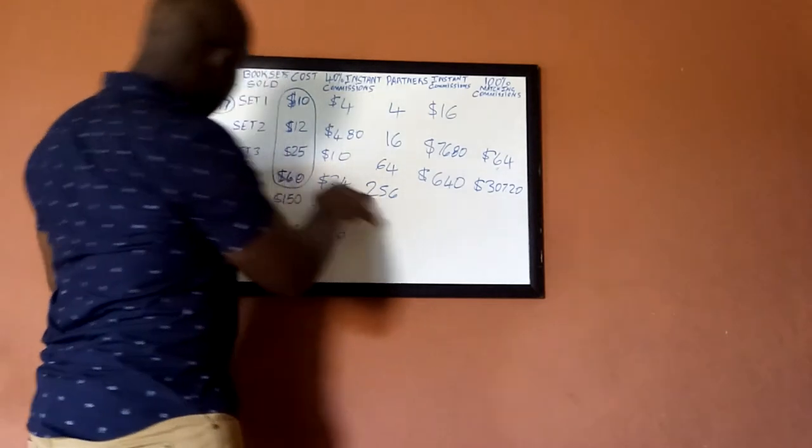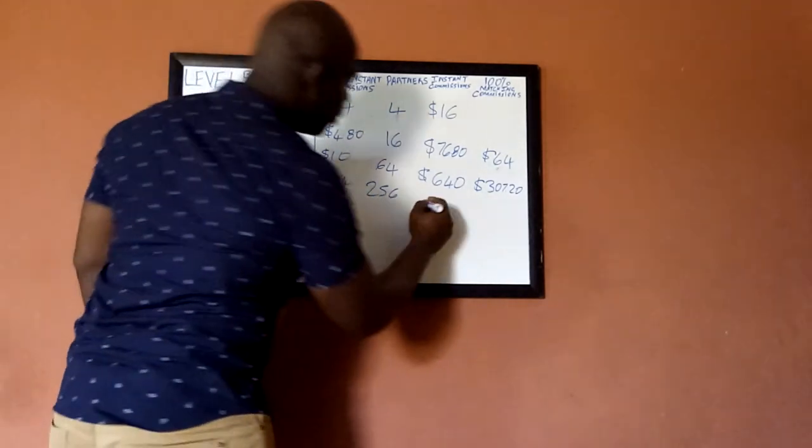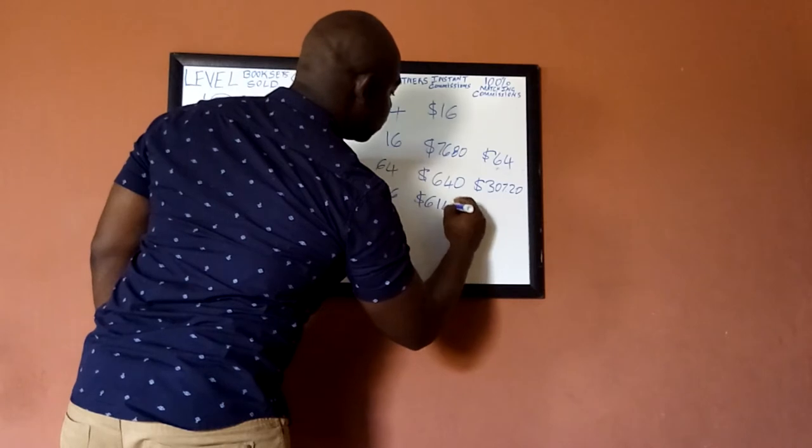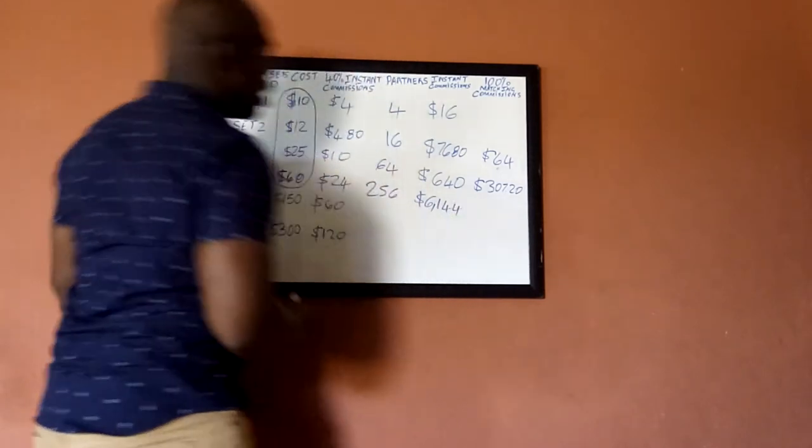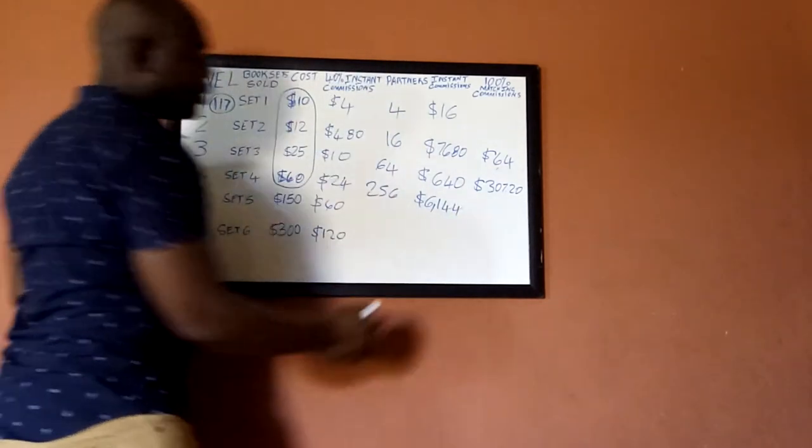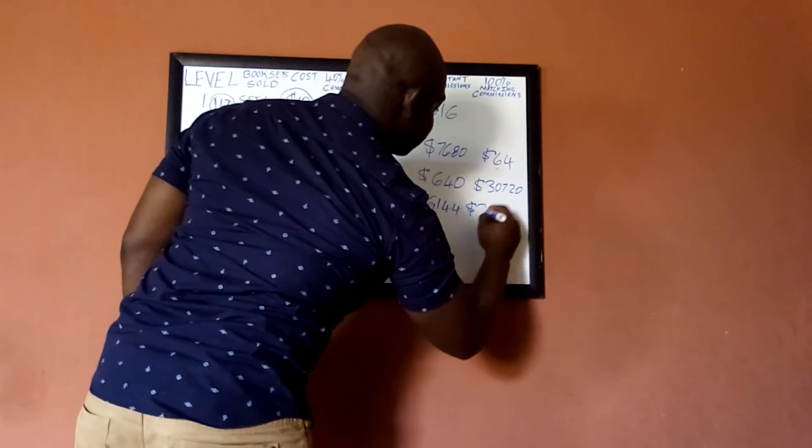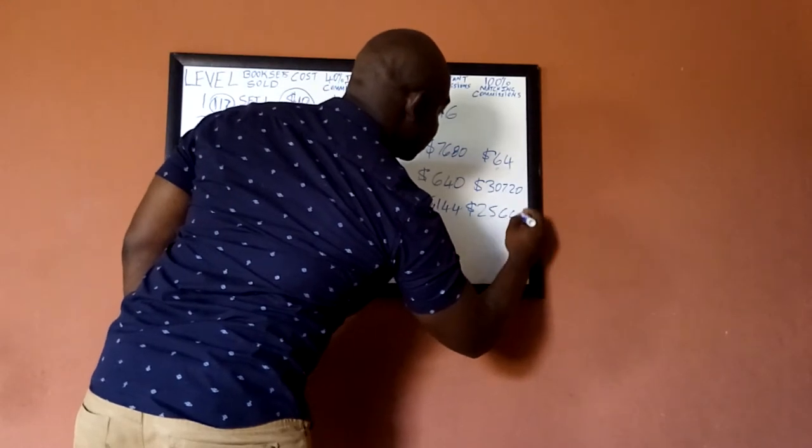What happens is the fourth one would hit you, so you get paid $24 per person here, so you get $6,144 right here. And the third one would hit you, so you get a matching commission of $2,560.